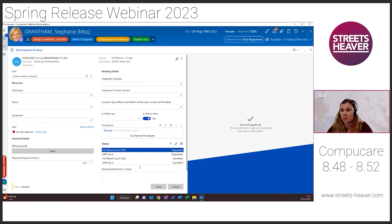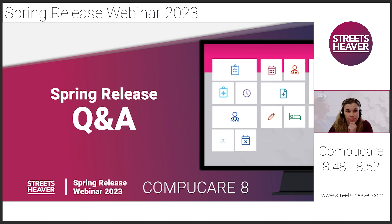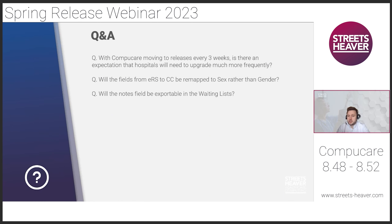Handing back to Tom for the Q&A. A few examples of questions asked: First — with CompuCare moving to three-week releases, will hospitals need to upgrade more frequently? The answer is no. We still expect most customers will align with our quarterly releases in line with spring and summer webinars, upgrading roughly two to three times a year. Moving to three-weekly releases means customers on specific projects or new implementations can take advantage of latest changes and give feedback sooner.